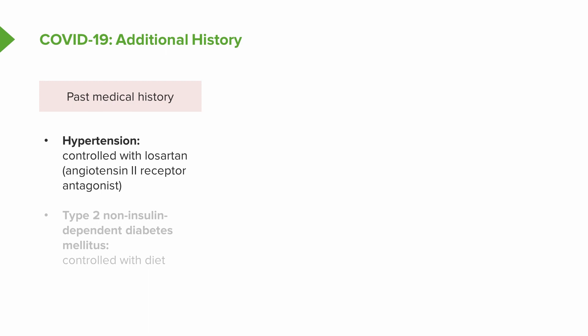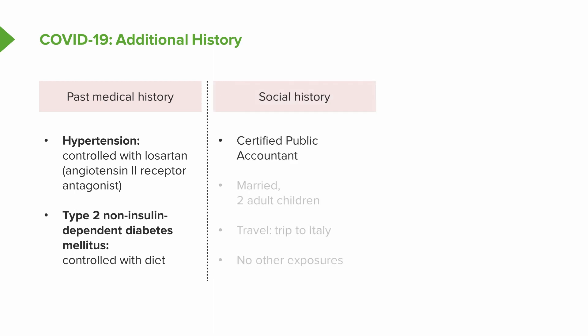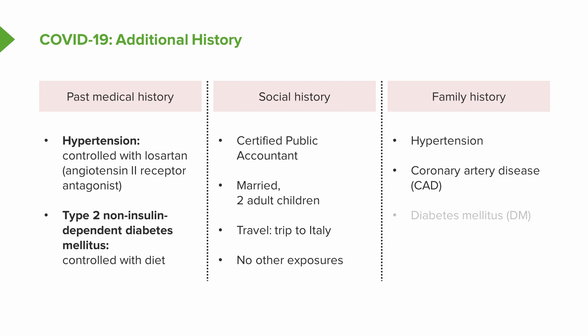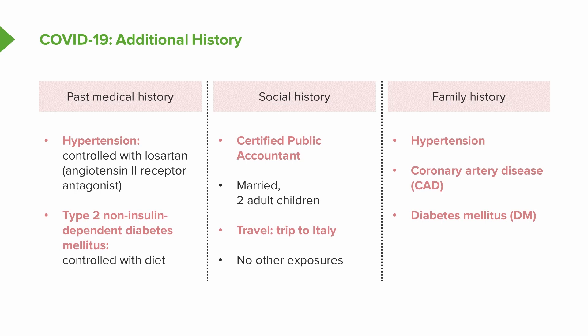Past medical history: he has hypertension, ostensibly controlled with losartan, an angiotensin 2 receptor antagonist, and has recently been diagnosed with type 2 non-insulin dependent diabetes mellitus controlled with diet. Social history: he is a certified public accountant, married with two adult children, with the recent travel noted and no other known sick contacts or unusual animal exposures. Family history includes hypertension, coronary artery disease, and insulin-dependent diabetes mellitus.